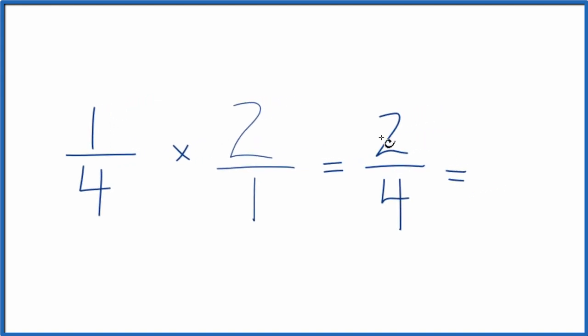And we can simplify that. 2 divided by 2 is 1, and 4 divided by 2 is 2.